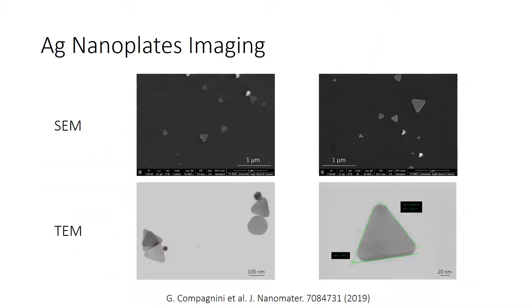Here we can observe some SEM and TEM images of our silver nanoplates. These images confirm the triangular shape of our nanoplates and the size ranging between 100 and 200 nanometers.